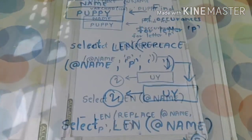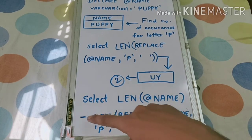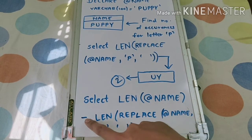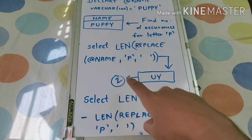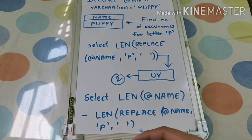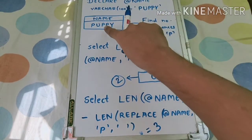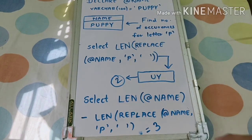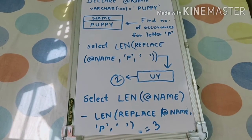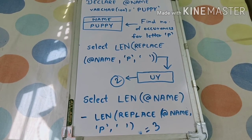The final query looks like this: SELECT LENGTH(name) — which returns five — minus LENGTH(REPLACE(name, 'p', '')) — which returns two. So five minus two gives us three. And indeed, in our original string 'puppy', there are three occurrences of the letter P. This is how you find the number of occurrences of any letter in a given string using the LENGTH and REPLACE functions.